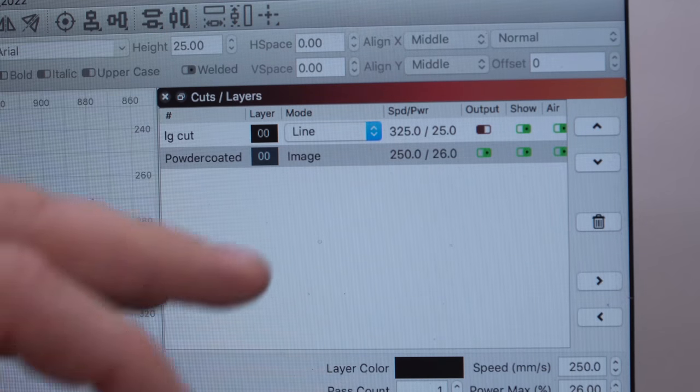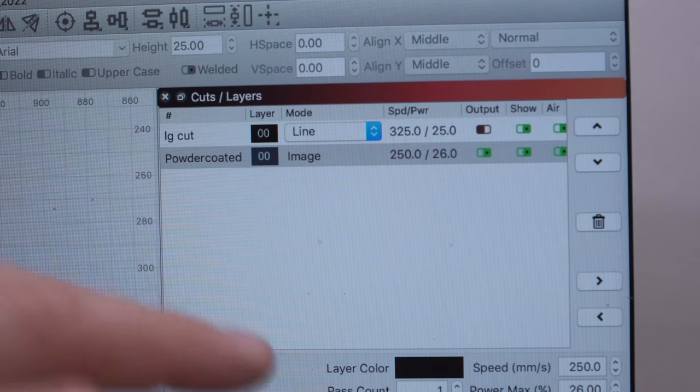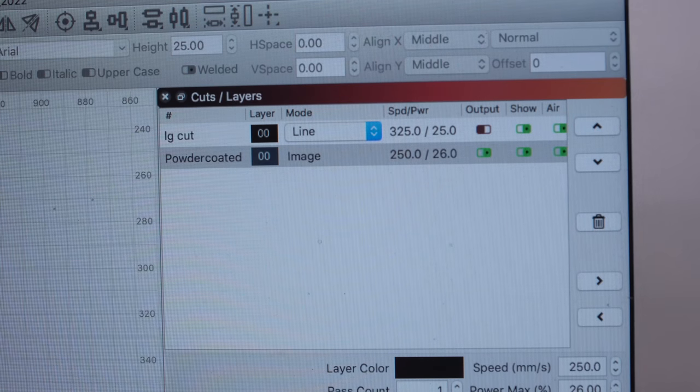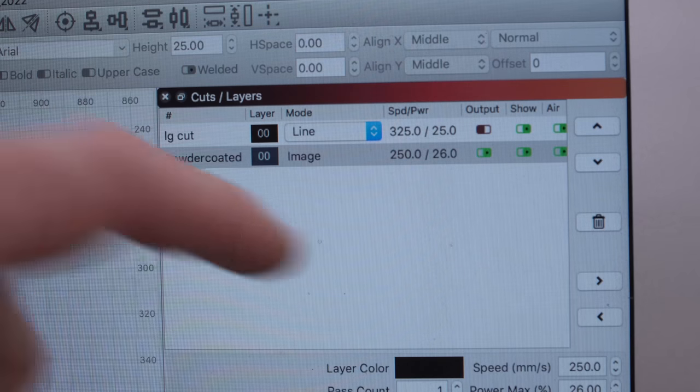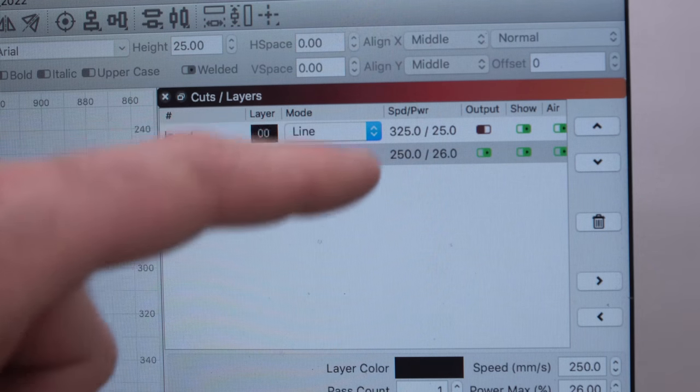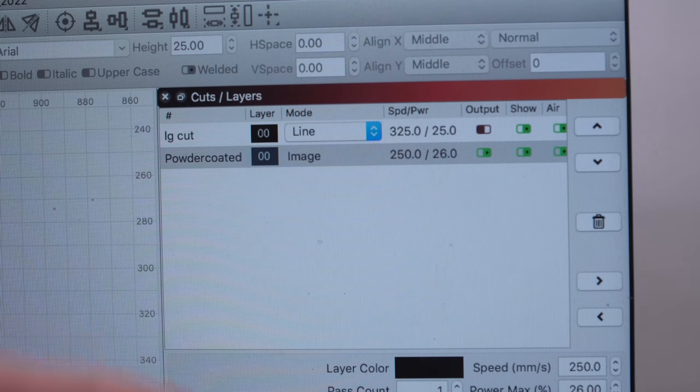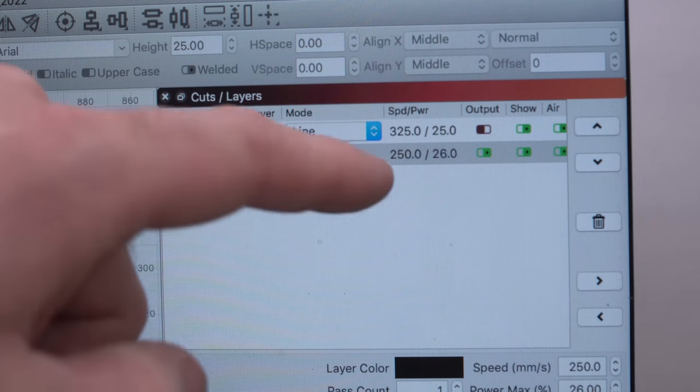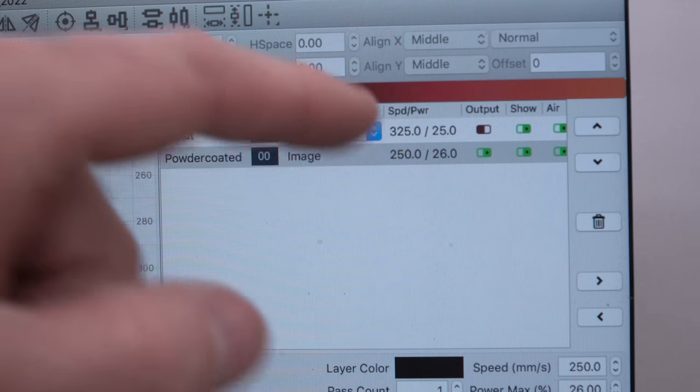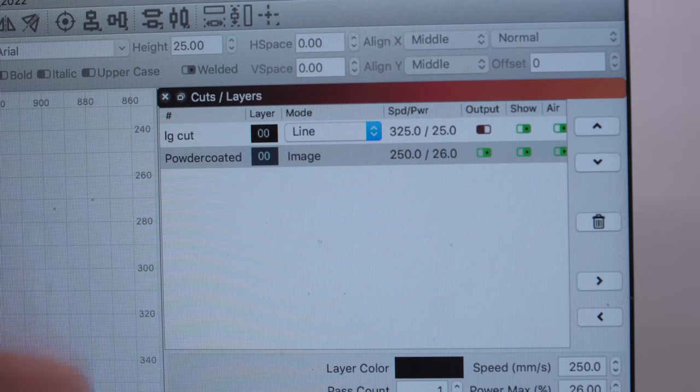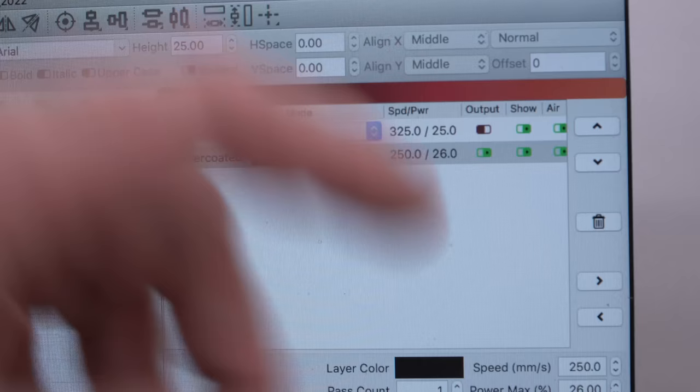So the last thing you have to know is the speed and power settings. And I have found that for these cups, which I'll give you a link to, I have found that these settings work really well with my machine. I'm giving you this as a starting point, not as a hold me to it. This is law. This is just 250 millimeters per second is how fast the gantry moves and the rotary turns and 26% power.